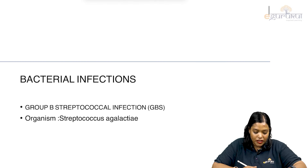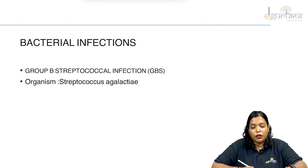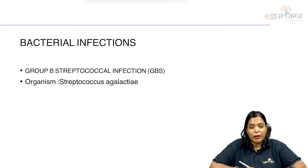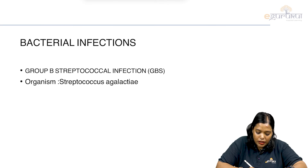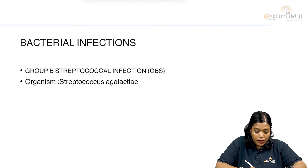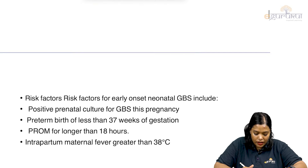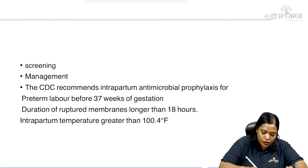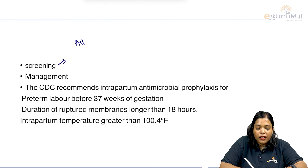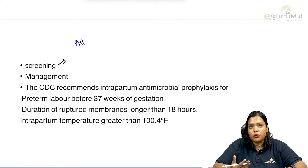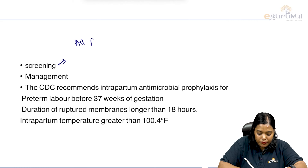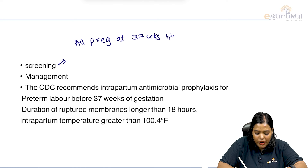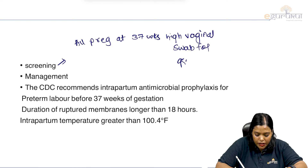In bacterial infections, we have group B streptococcal infection. This mainly causes neonatal meningitis. The organism is Streptococcus agalactiae. It's very important to screen and manage for group B streptococcus. For screening, all pregnant women at 37 weeks, we are taking a high vaginal swab for group B streptococcus.